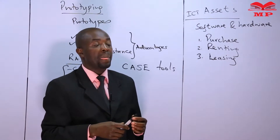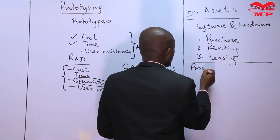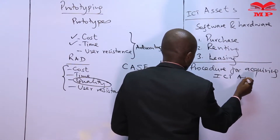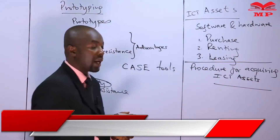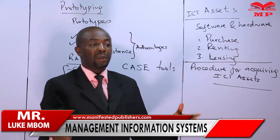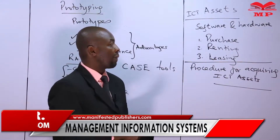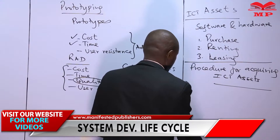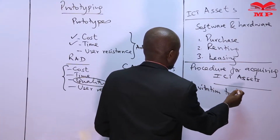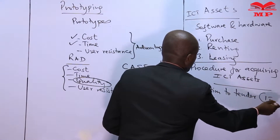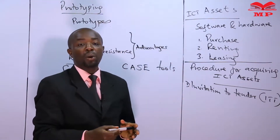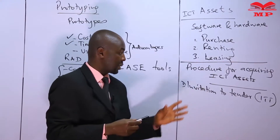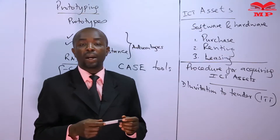These are the methods we can use to acquire ICT assets. There is also a procedure for acquiring ICT assets — we don't just walk into a shop and say give me this hardware or software. The first point in the procedure is the invitation to tender document. The organization that requires the hardware and software, or the members of the development team, will prepare an invitation to tender notice.